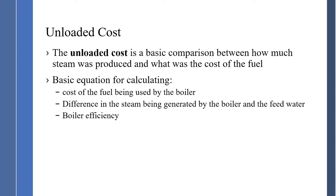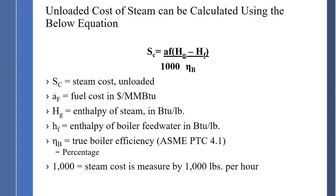The basic equation for calculating steam cost: cost of fuel being used by the boiler, difference in steam being generated and the feed water, and boiler efficiency. The calculation is: SC equals AF times (HG minus HF) divided by 1000, divided by boiler efficiency. AF is the fuel cost per million BTUs. HG is the enthalpy of steam in BTU per pound — output of the boiler. HF is the enthalpy of the boiler feed water in BTU — the water coming in from the deaerator. NB is the true boiler efficiency per ASME PTC 4.1, as a percentage. And 1000 represents the steam cost measured in 1000 pounds per hour.